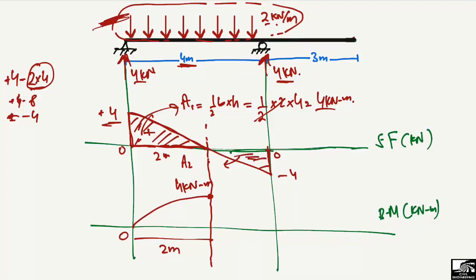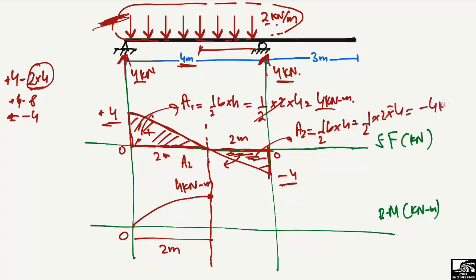For the second triangle A2, the base is again 2 meters and the height is −4 kN, giving an area of −4 kN·m. Adding +4 and −4 brings the bending moment back to zero. This completes the bending moment diagram for this beam.